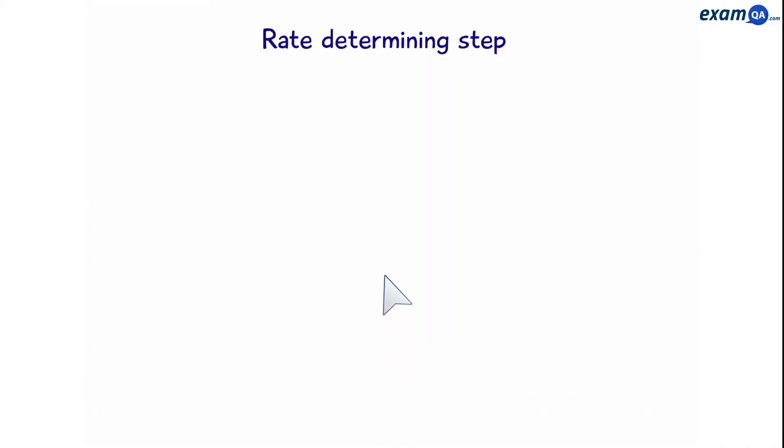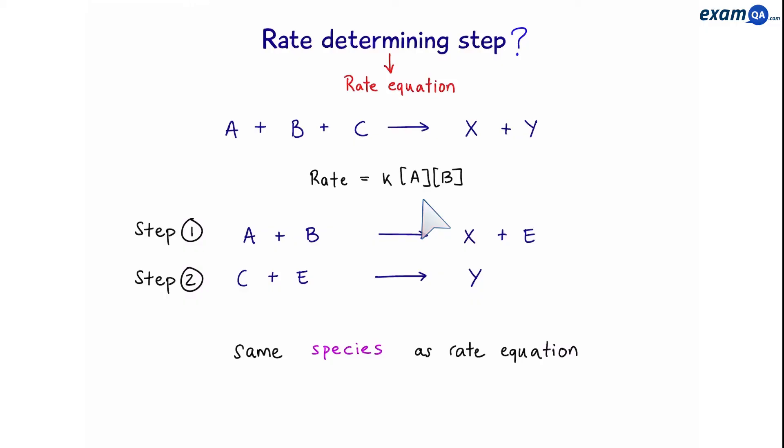Okay, so we know what a rate determining step is, but how do we identify it? To do that, we need the rate equation. So, let's say for this reaction, we've been given the rate equation. We have step 1 and step 2. So, from step 1 and step 2, how do we know which one is the rate determining step, based on looking at the rate equation? The answer is that you have to look at the step that has the same species as the rate equation.